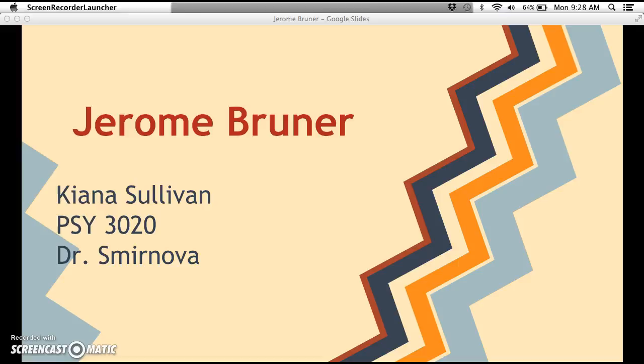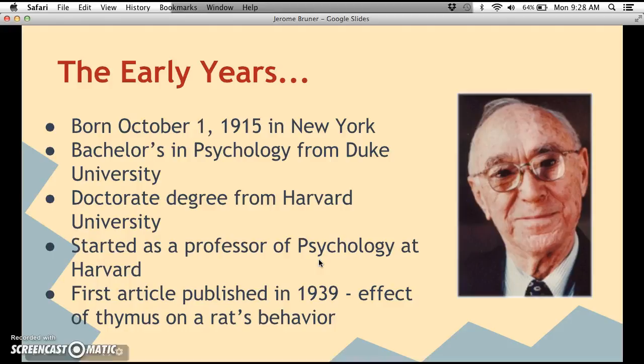I'm going to be doing my presentation on Jerome Bruner, who was a constructivist theorist. He was born on October 1st, 1915 in New York — he will be a hundred this year, which is pretty cool. He received his bachelor's degree in psychology from Duke University, got his doctorate from Harvard, started as a professor of psychology at Harvard, and his first article was published in 1939, looking at the effect of the thymus on a rat's behavior.